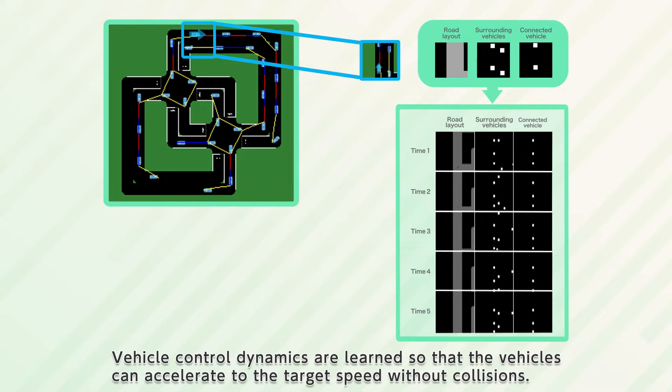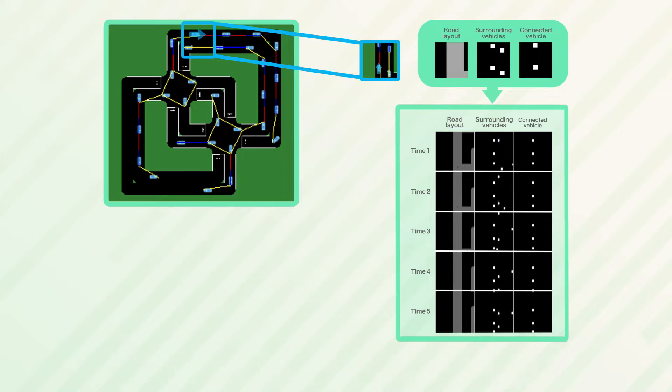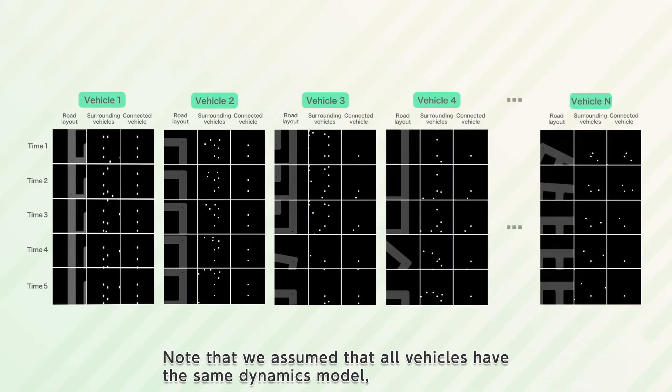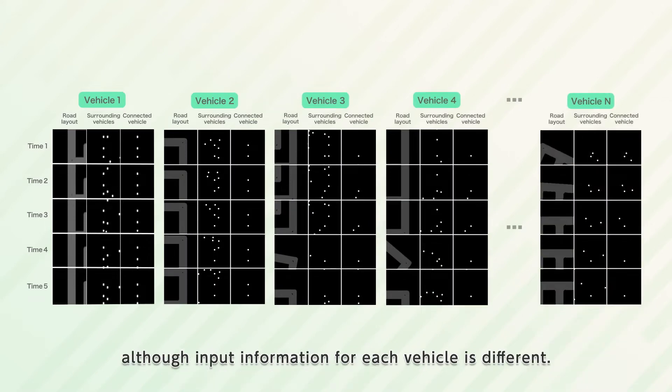Vehicle control dynamics are learned so that the vehicles can accelerate to the target speed without collisions. Note that we assumed that all vehicles have the same dynamics model, although input information for each vehicle is different.